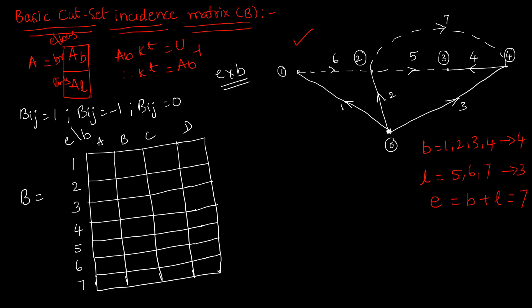Let us go with the first cut set, named A. It follows the direction of branch 1. Two elements are cut by basic cut set A: element 1 and element 6. We follow the direction of element 1, so it is +1. For the sixth element, its direction is opposite to the cut set direction, so it is -1. This cut set has no interaction with the rest of the elements, so put 0 for them.